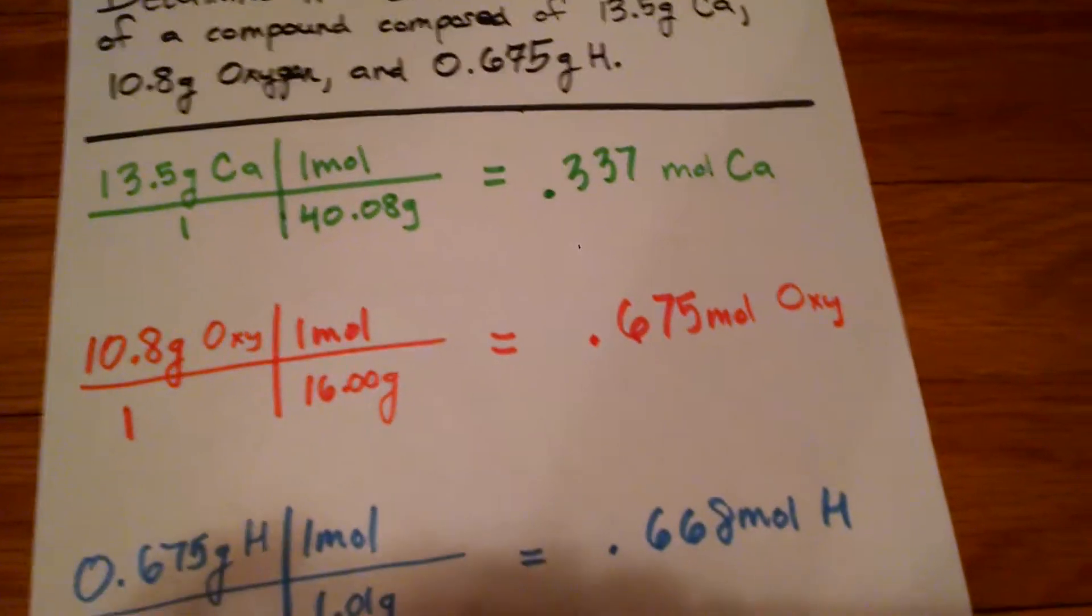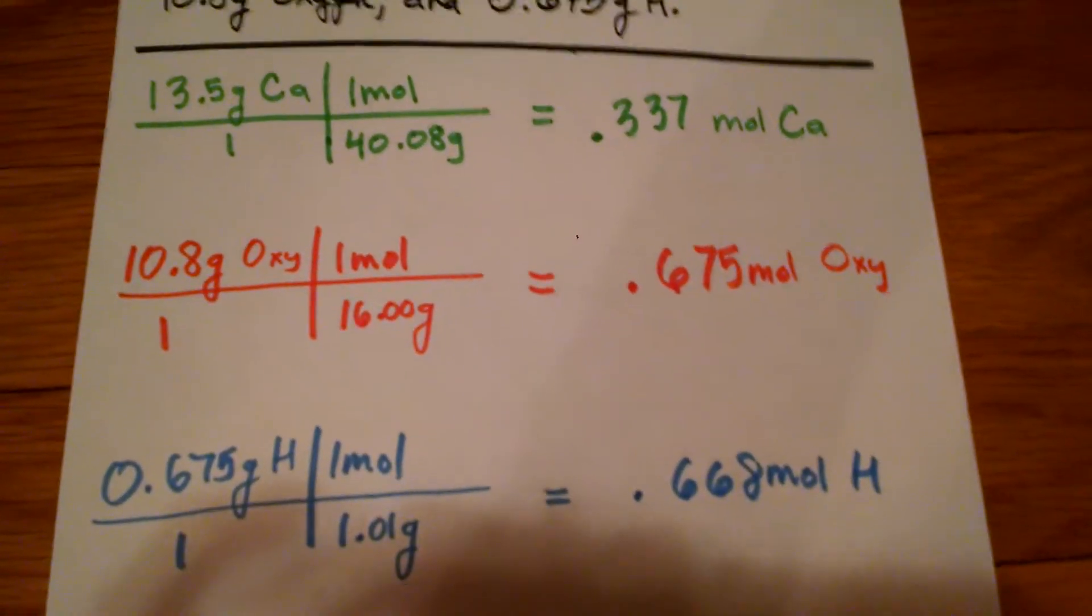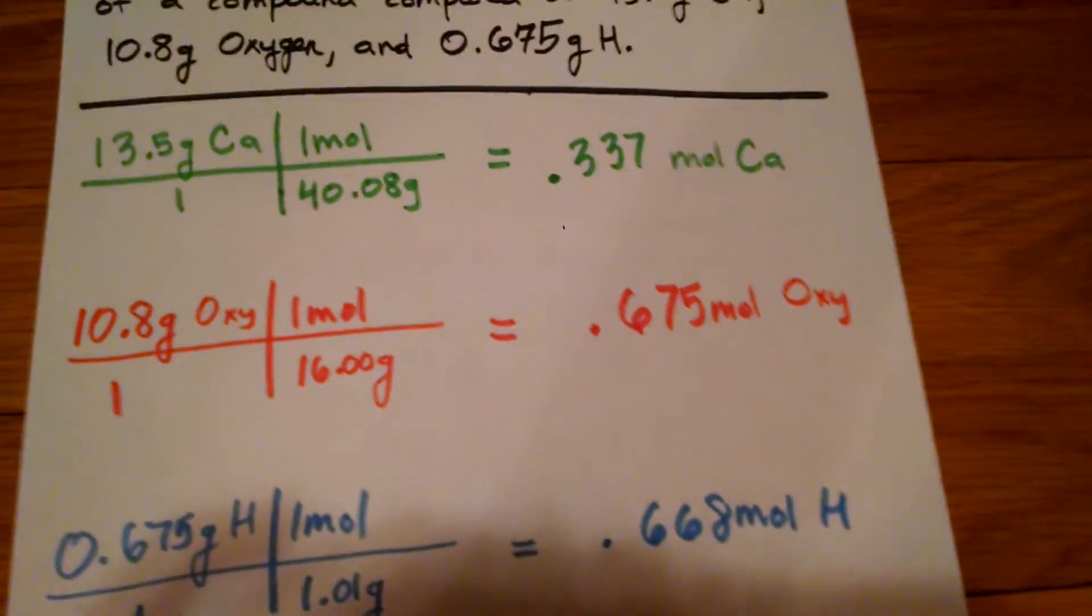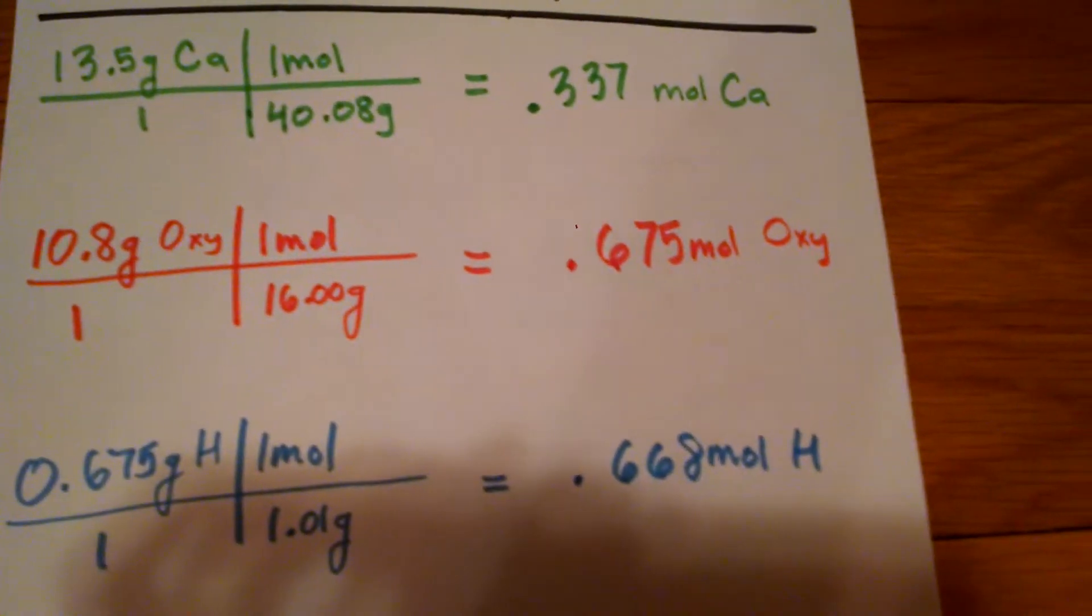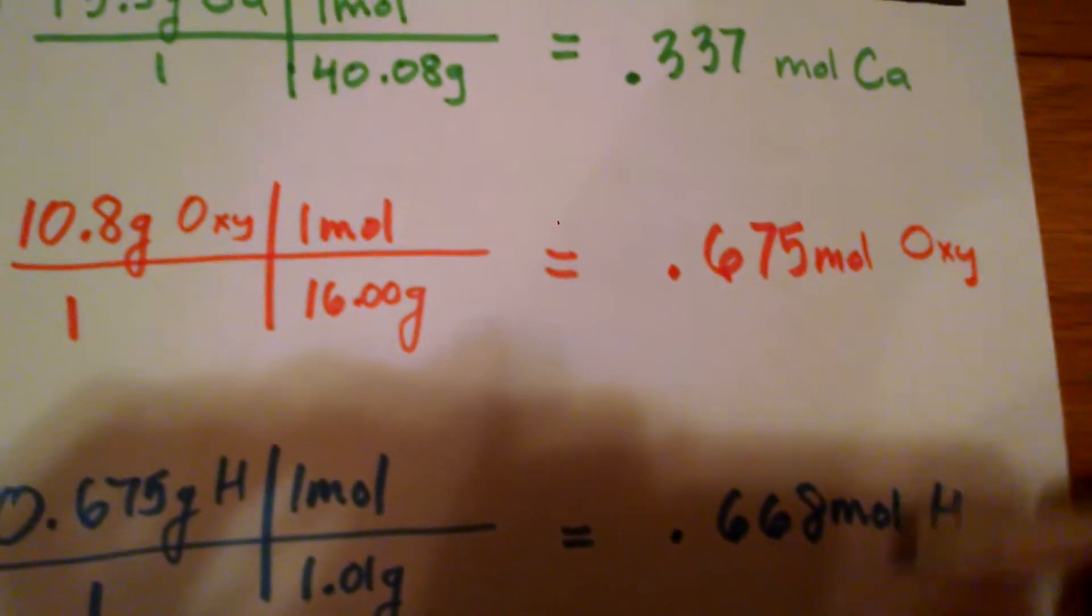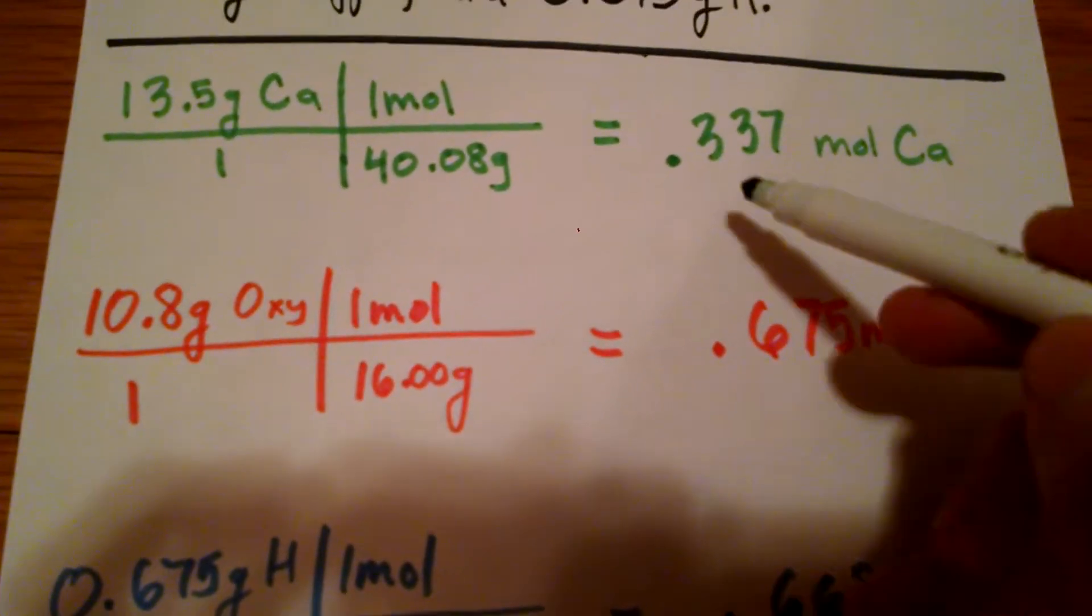That's how you find a ratio. You want something to 1, like 2 to 1 or 3 to 1. You don't want 0.675 to 0.337. That's lame. So we're going to divide each of these by the smallest amount. Obviously, the smallest amount will be 0.337 moles.